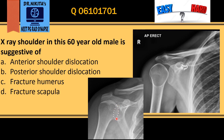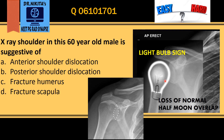That is the normal half moon overlap. What happens here is the overlap between the humeral head and the glenoid is lost — there is loss of the normal half moon overlap. Plus, the head of the humerus is more globular and looks like a light bulb — that is the light bulb sign of posterior dislocation.